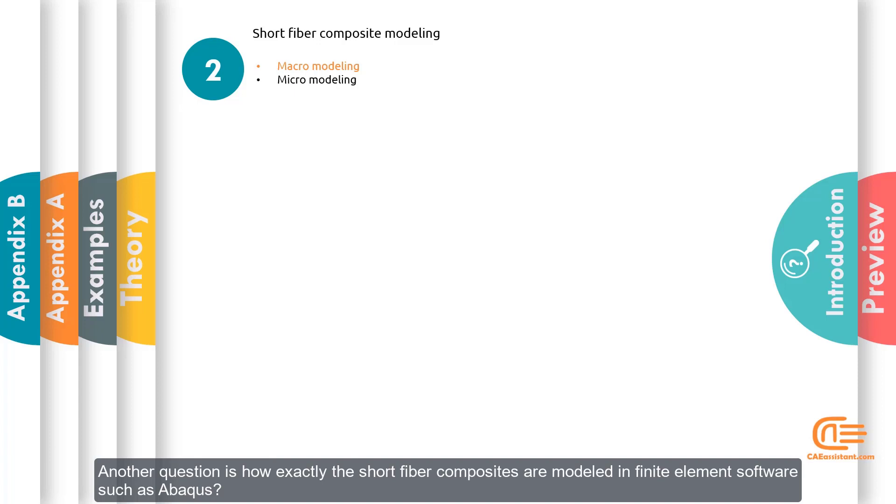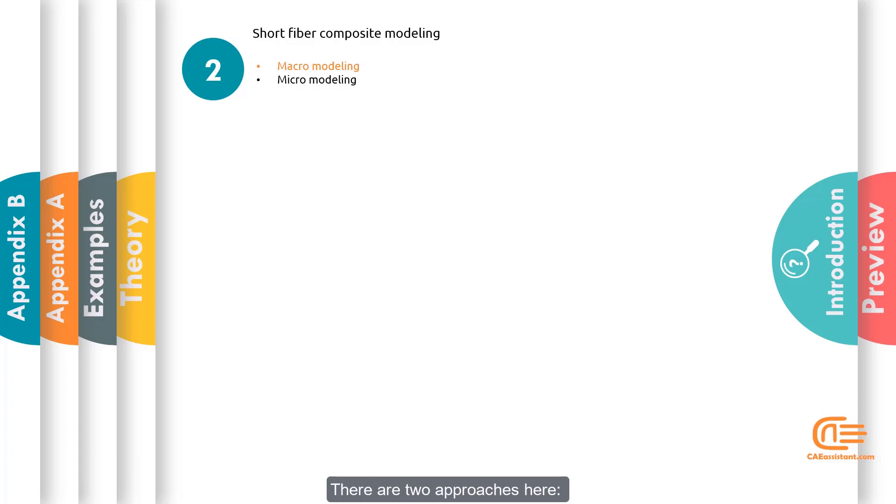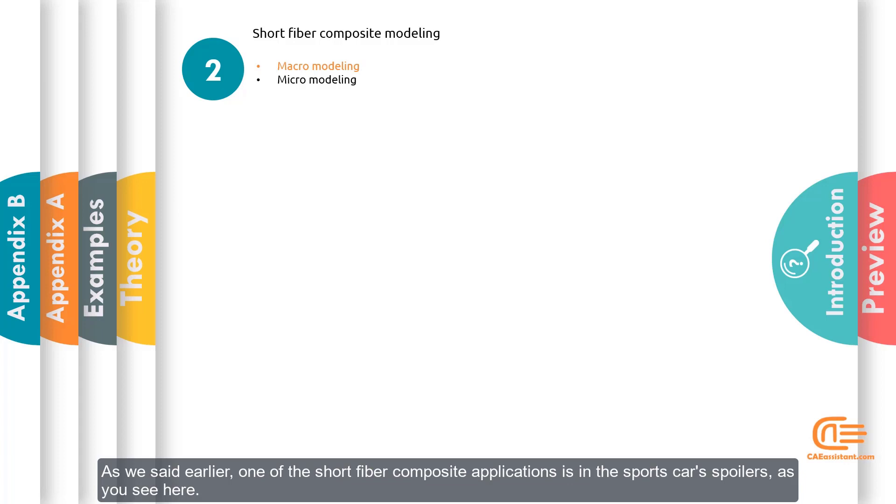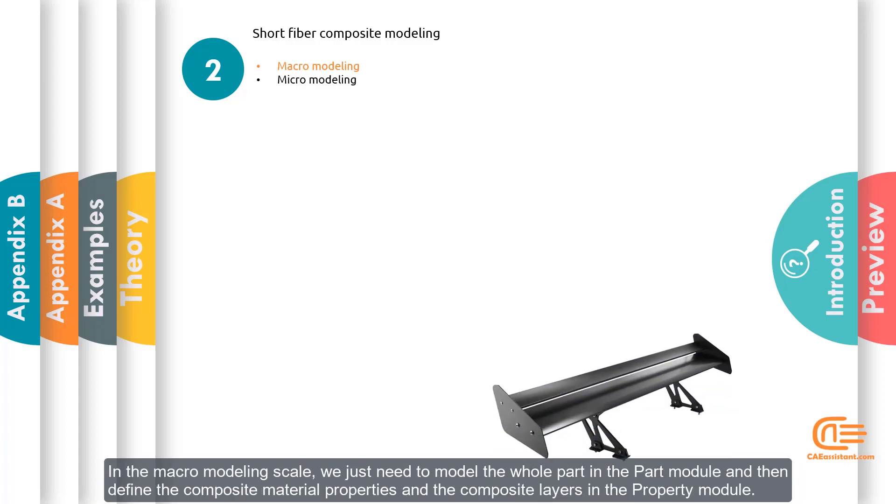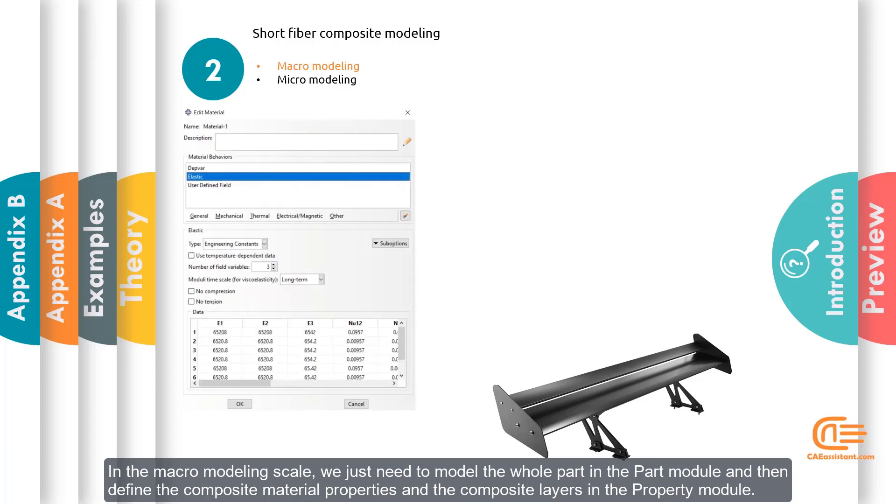Another question is how exactly the short fiber composites are modeled in finite element software such as Abaqus. There are two approaches here: macro modeling scale and micro modeling scale. Let's see the macro modeling first. As we said earlier, one of the short fiber composite applications is in sport car spoilers as you see here. In the macro modeling scale, we just need to model the whole part in the part module and then define the composite material properties and the composite layers in the property module.